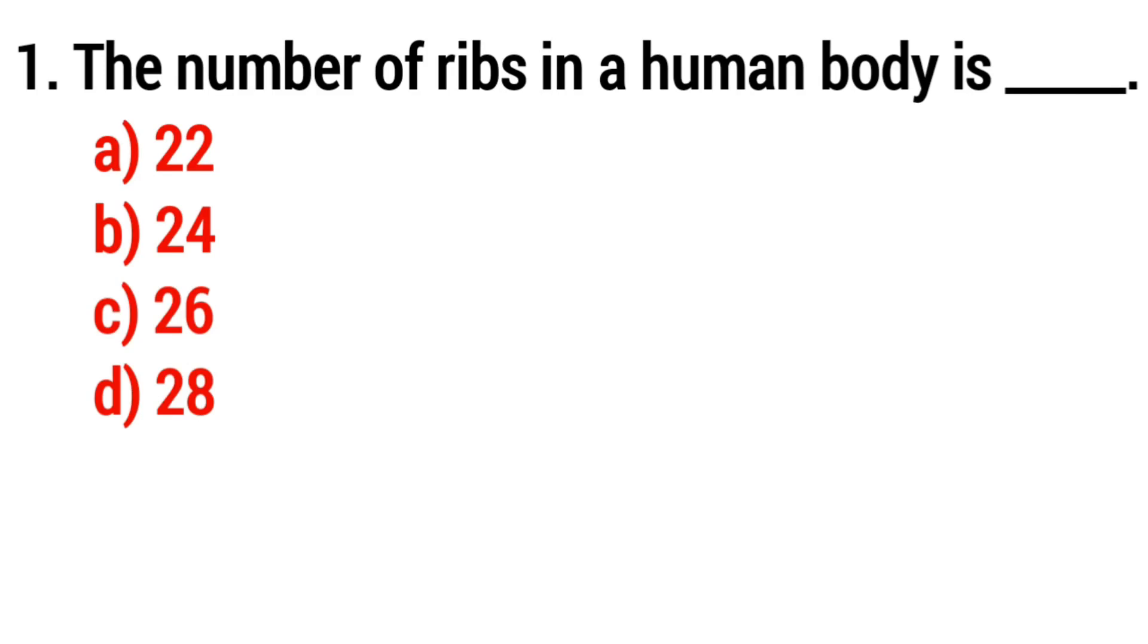The first question: The number of ribs in the human body is: option A 22, option B 24, option C 26, option D 28. The correct answer is option B, 24.